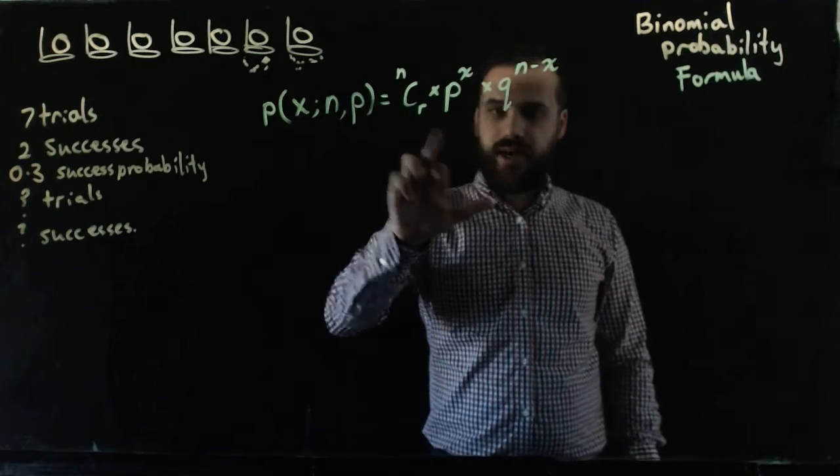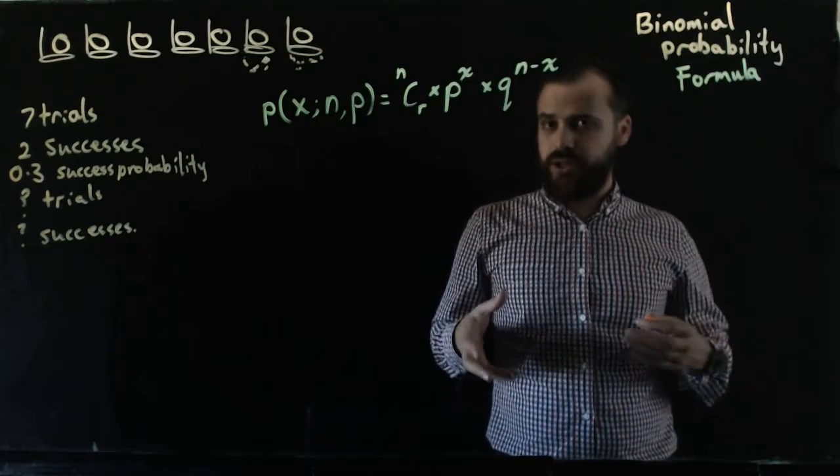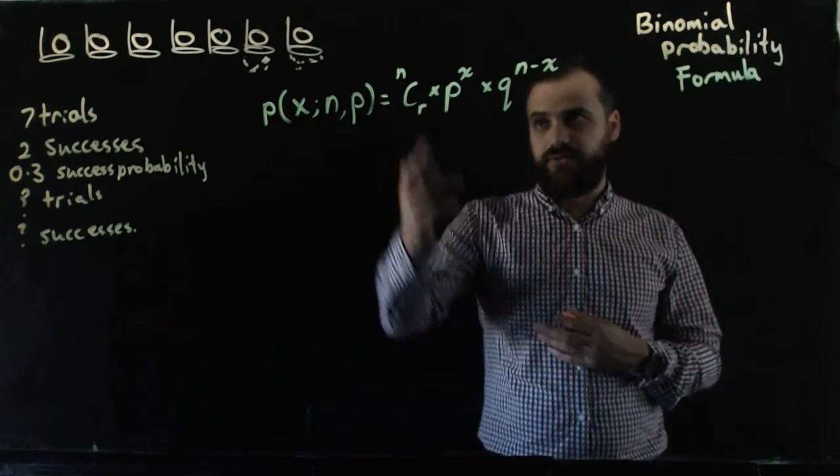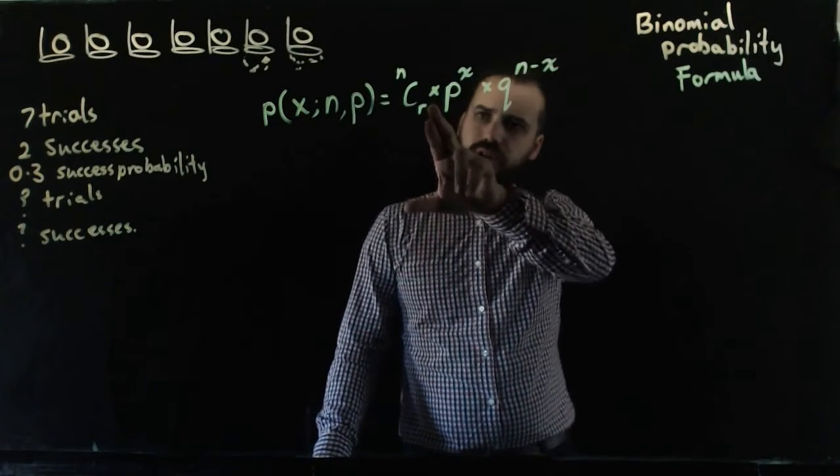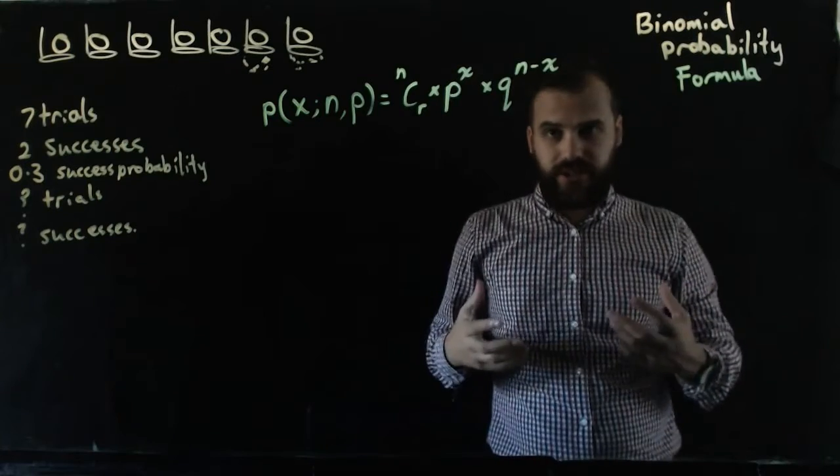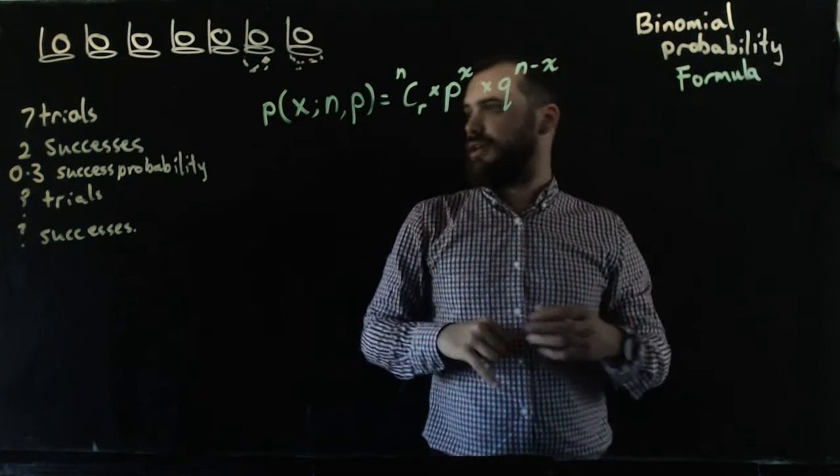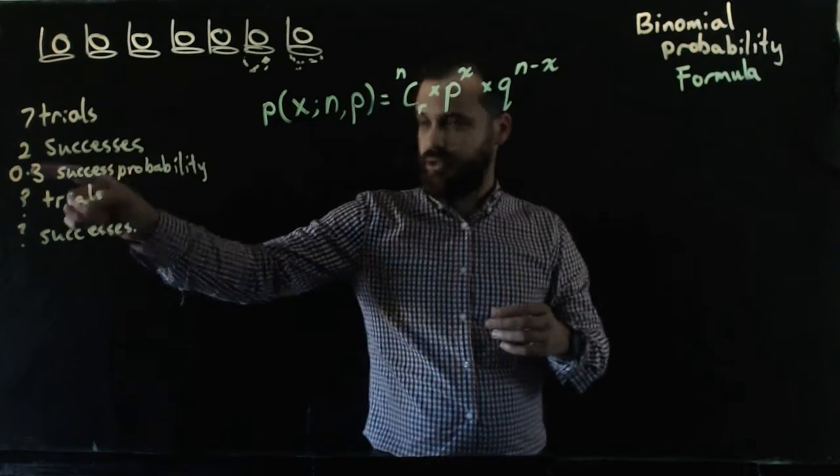This nCr number means the number of different ways that can happen, and you already know that you can use Pascal's triangle to figure out nCr. Times the probability of success—P stands for probability of success—to the power of x. X is the number of successes, 2.